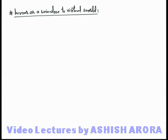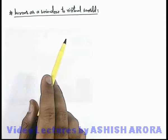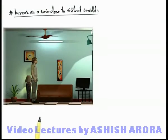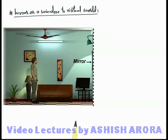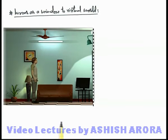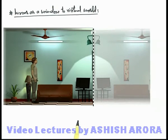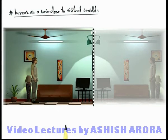Let us continue our discussion on a mirror acting as a window to the virtual world. To understand this concept, let's look at a picture of a room in which there are several objects like a fan, a lamp, a flower pot, and a chair. A boy is standing in the room, and on the facing wall a mirror is hanging. As we have studied, irrespective of the size of the mirror, the whole room can be considered as the object, and the image correspondingly obtained inside the mirror is for the whole room along with all the objects. So this is the virtual world obtained as the image of everything in front of the mirror.